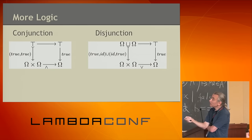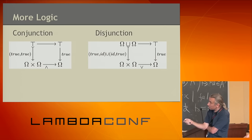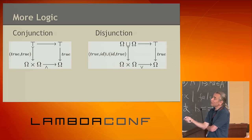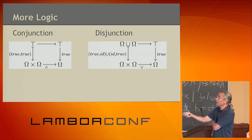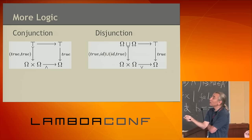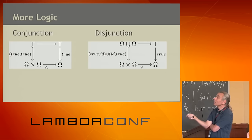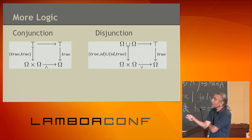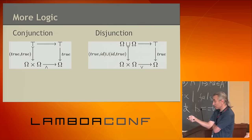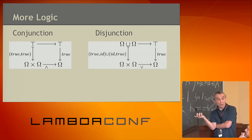Disjunction is a little bit trickier. We are classifying the union: if the left component contains true, or if the right component contains true, that's good. It's an opportunistic operation that classifies the union of Omega with Omega — a part of Omega cross Omega — with one copy defined on the left through identity and the other on the right.